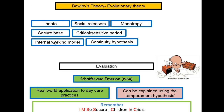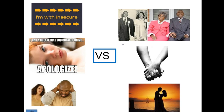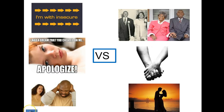The internal working model basically means how our first relationships with our caregiver shape how we expect other relationships to be. If our caregiver is really sensitive and responsive to our every need, we expect other people to be like that for us. This then goes on to the continuity hypothesis — your first relationship is going to predict how your future romantic relationships will be. You can have very insecure relationships simply because, based on the continuity hypothesis, their first relationships were not the best. Or you can have very secure relationships where you feel confident that person will be there for you, like a safe base.